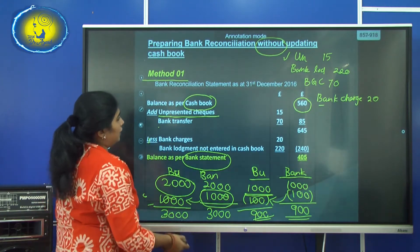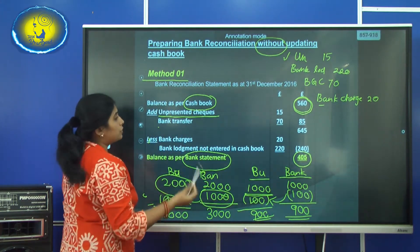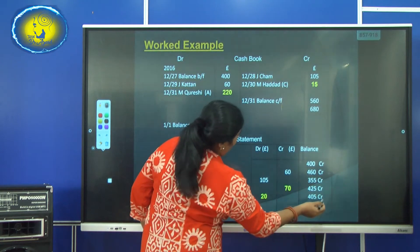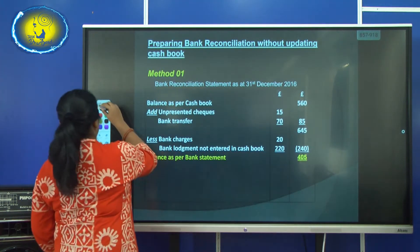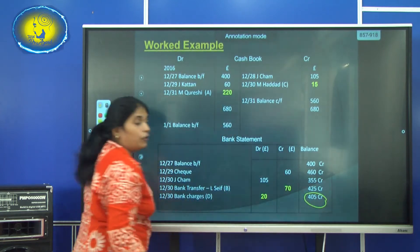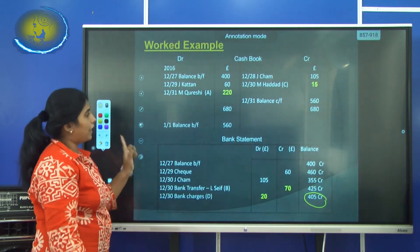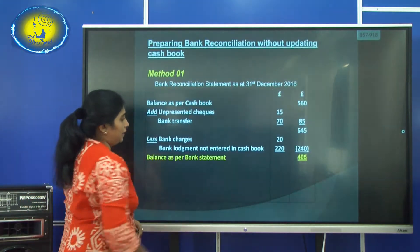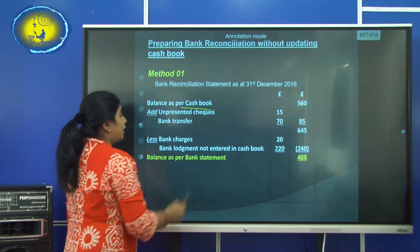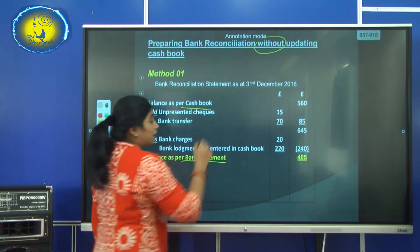Finally, you started with the cash book balance and you end with the bank statement balance. You can check whether this is correct — when you do the bank reconciliation statement, you got 405 as your balance per the bank statement. This is the first method where you start with the cash book balance and end with the bank statement balance, prepared without updating the cash book.